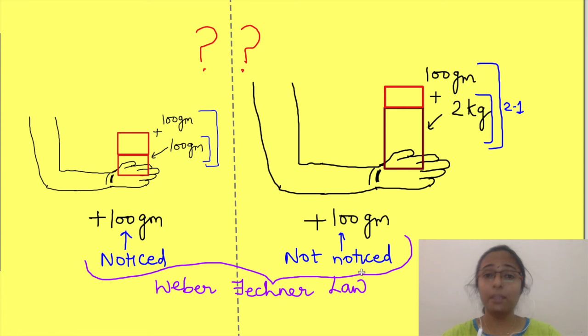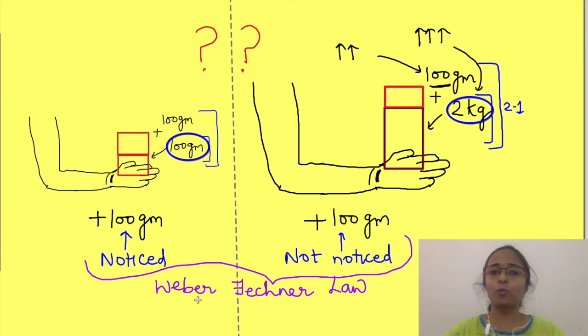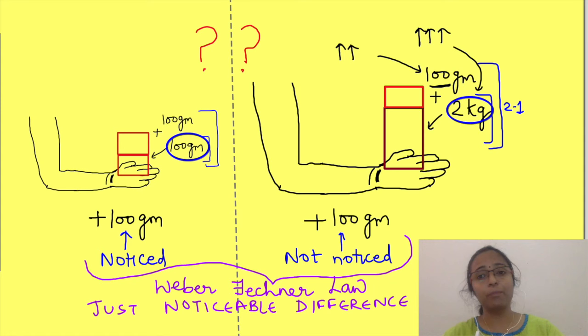If the original stimulus is of higher intensity, you need a greater additional change to perceive the change. But how much greater? Will you perceive the difference from 2 kg if 200 grams is added, or 400 grams, or 1 kg? This minimal difference of stimulus intensity which needs to be changed so that it can be perceived is known as just noticeable difference, the minimal difference between two stimuli that can be perceived.